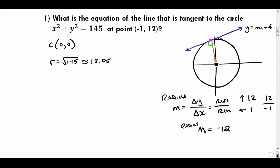A line perpendicular to another has a slope that is the opposite reciprocal. Since the radius slope is -12, the perpendicular tangent line will have a slope of positive 1/12. You take the opposite sign and flip the fraction — that's the reciprocal.